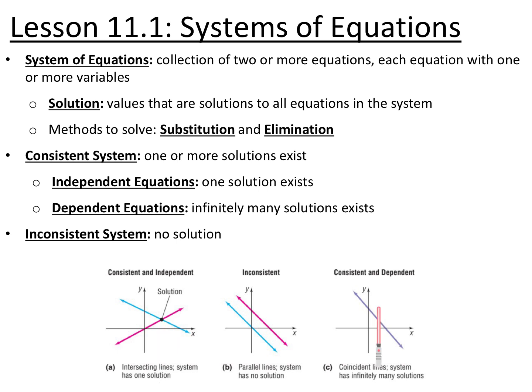A consistent and dependent system means the equations are on top of each other, so there are infinitely many solutions. An inconsistent system, which for linear equations would be parallel lines, has no solution because they never intersect.